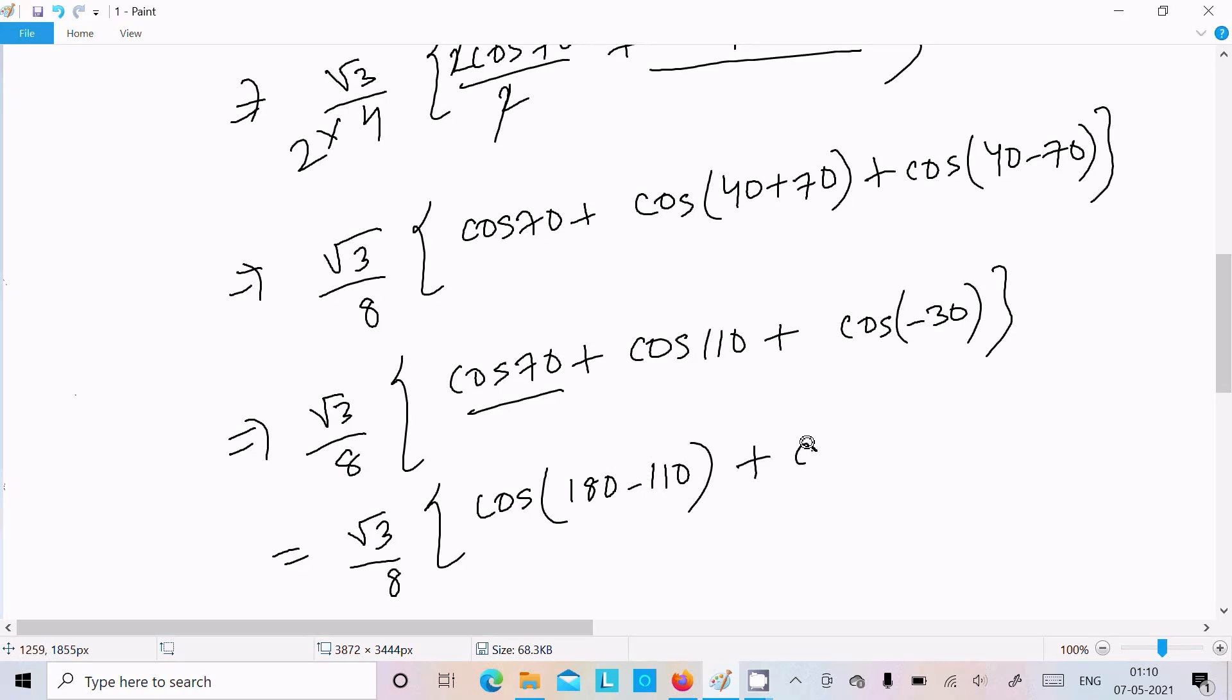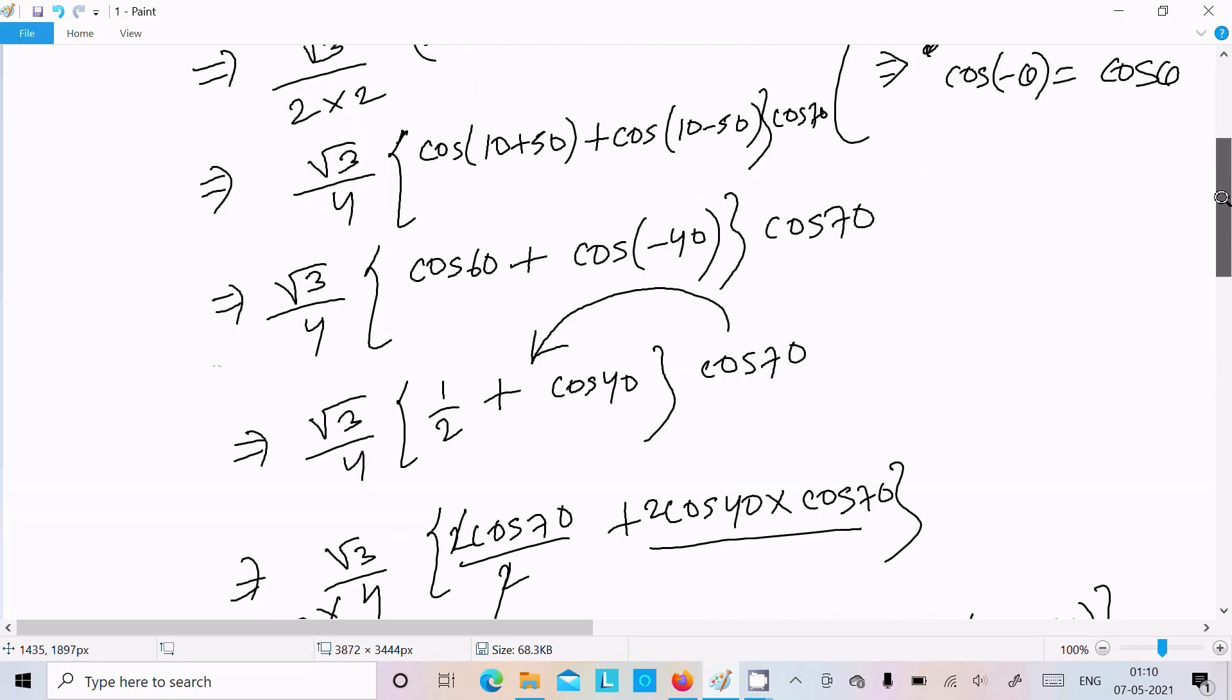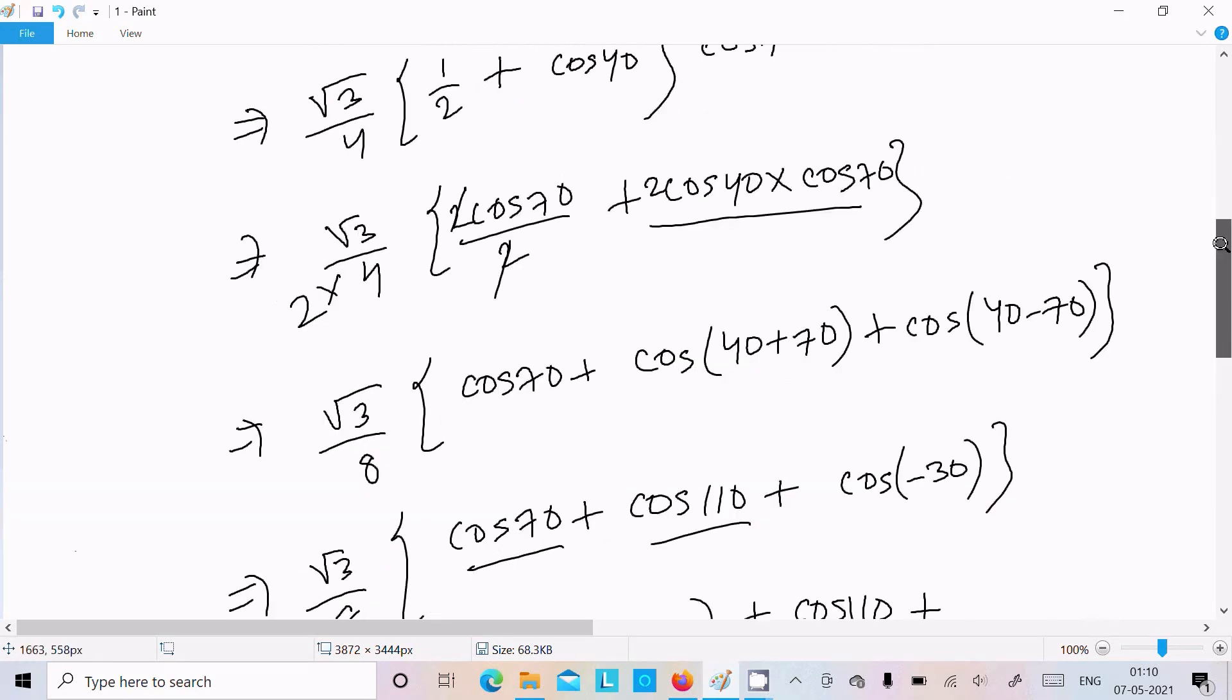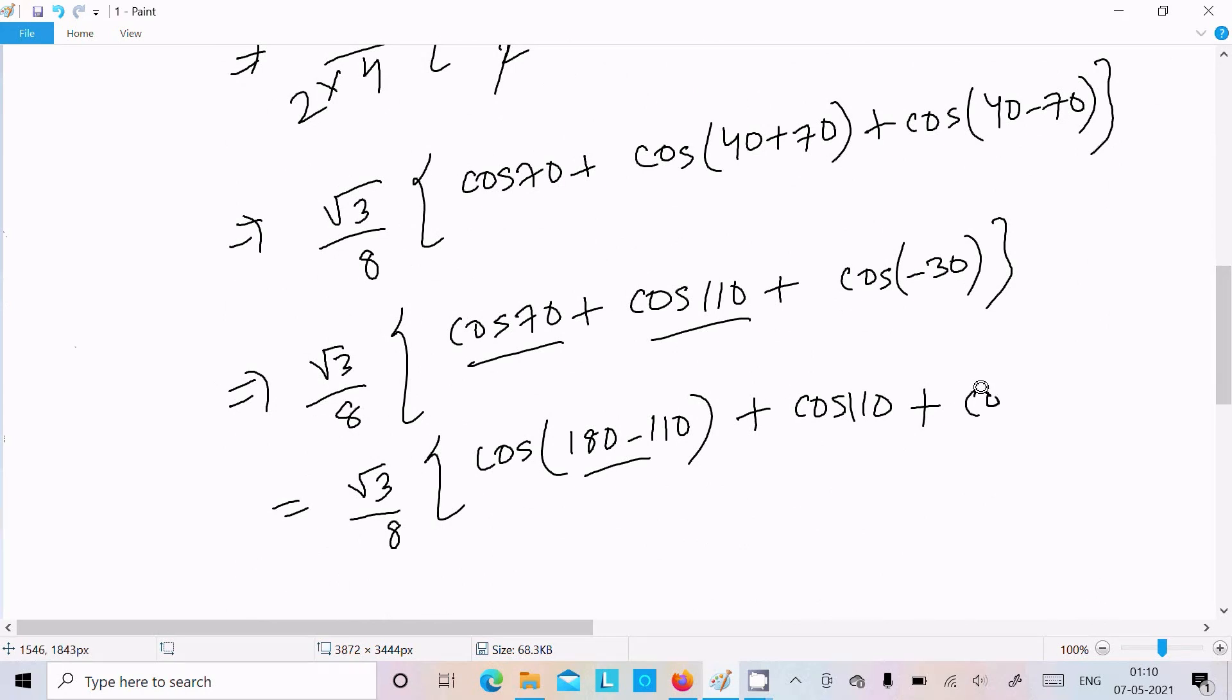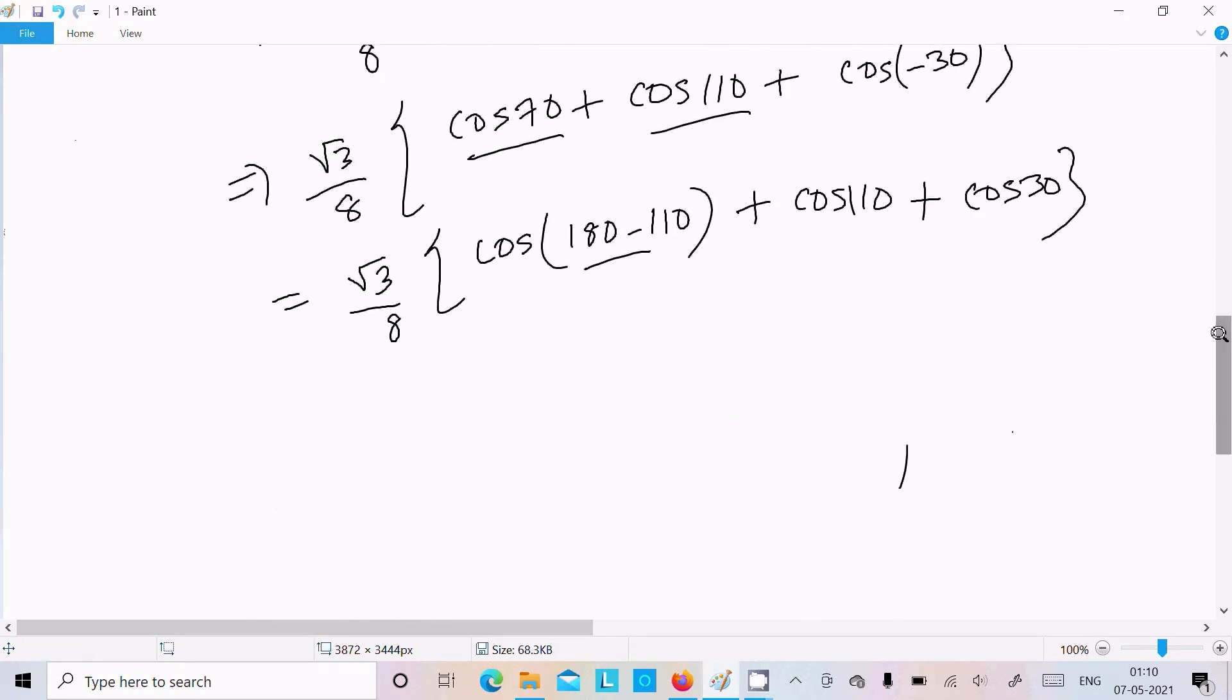So that's converted. And cos minus theta is cos theta, so this is cos30. Now thereafter, 70: 180 minus 110, that is 70.